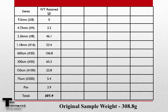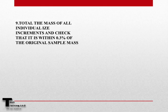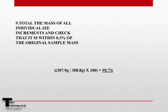One of the first things we want to do is total the mass of all individual size increments. Here, we wind up with 307.9 grams after sieving. Step 9 of our performance review was to total the mass and check that it is within 0.3% of the original sample mass. If we have lost or gained more than 0.3%, our test would be considered invalid. However, here, if we do the calculation, we can see that we have retained 99.7% of the sample. Therefore, this is a valid test and we will continue with the calculations.